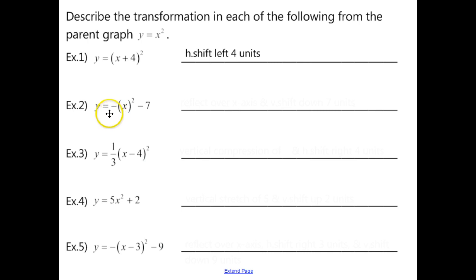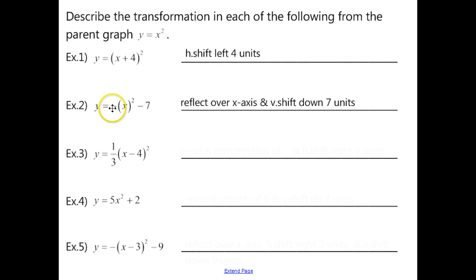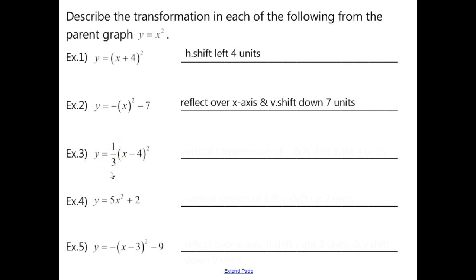Example 2 has a negative outside of the function and a negative 7 outside as well. So we're going to reflect over the x-axis using that negative, and then we're also going to have a vertical shift down 7 units. In example 3, we have one-third outside, and since that number is less than 1, it's going to be a vertical compression by one-third. The 4 inside tells us we're going to do a horizontal shift in the opposite direction — to the right 4 units.